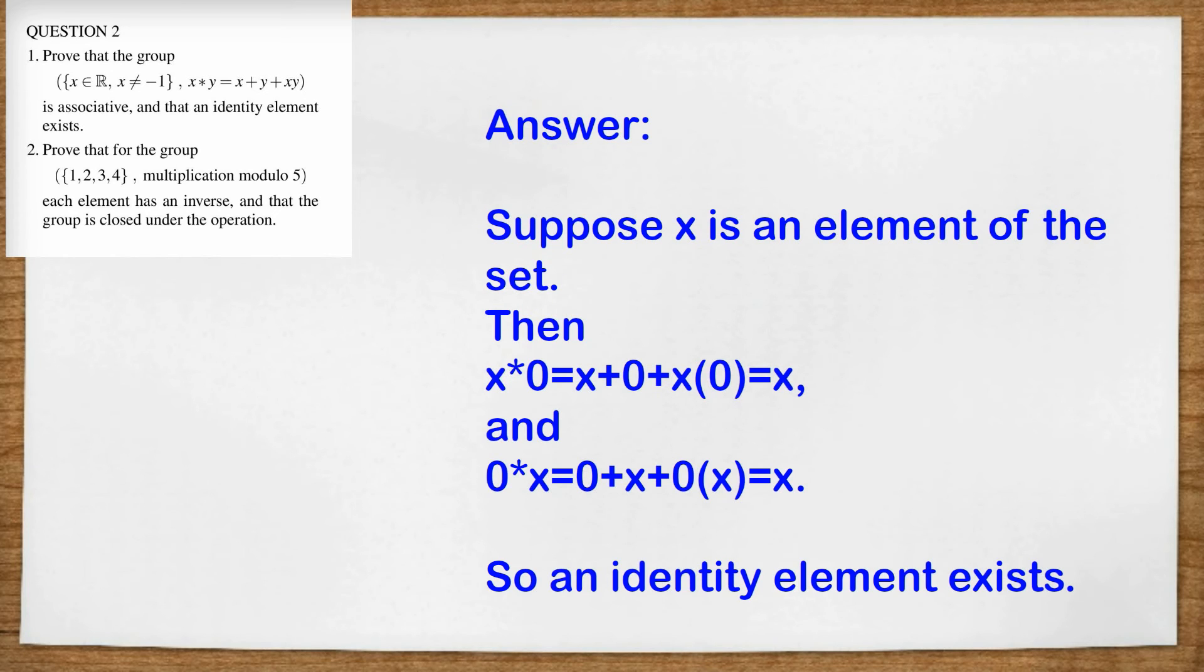Now let's do a proof that it actually works for all elements of the set. Suppose x is an element of the set. Then x star zero equals x plus zero plus x times zero, which equals x. And also zero star x equals zero plus x plus zero times x, which also equals x. So we've shown both of those equations are true. So an identity element exists.